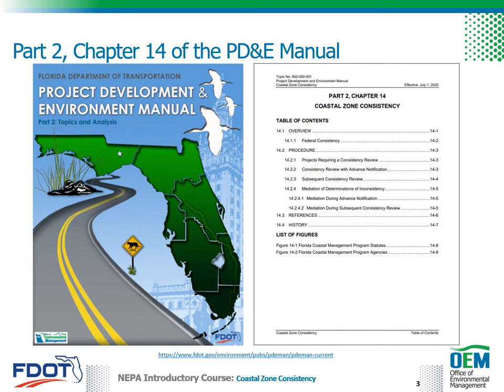The chapter, entitled Coastal Zone Consistency, outlines procedures for determining the effects of transportation projects on Florida's coastal zone. You may want to have this chapter handy as you go through this training. This chapter is available on FDOT's Office of Environmental Management website using the link at the bottom of the slide. This link can also connect you to other chapters of the PD&E Manual that are referenced throughout this training.